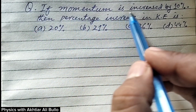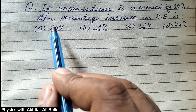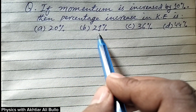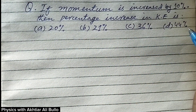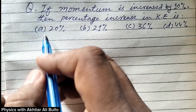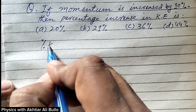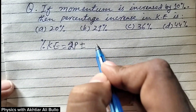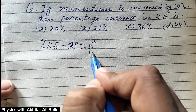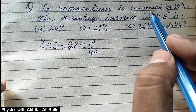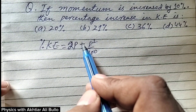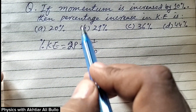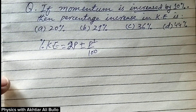The question is: if momentum is increased by 10%, then the percentage increase in kinetic energy is: a) 20%, b) 21%, c) 36%, d) 44%. To calculate the percentage increase in kinetic energy, we will use the formula 2p ± p²/100. When there is an increase in momentum we take plus, and when there is a decrease we take minus.